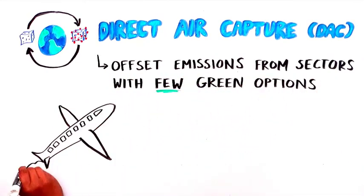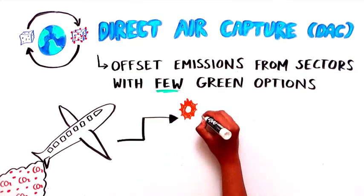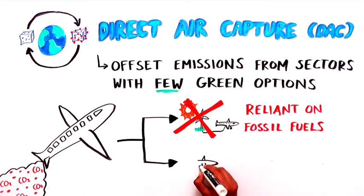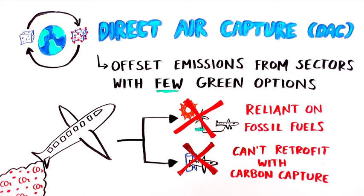For example, airplanes. Airplanes cannot fly on renewable energy, so they rely on fossil fuels. They also cannot be retrofitted with a carbon capture unit directly, like some industrial flue stacks can. So instead, direct air capture can be used to offset these difficult-to-target carbon emissions.